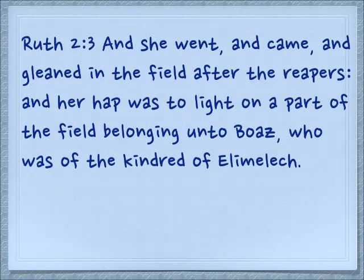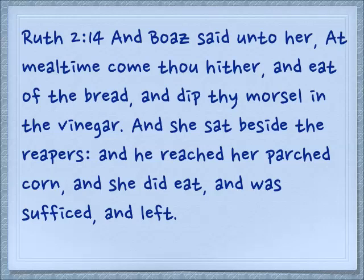Ruth takes advantage of the gleaning laws: 'She went and came and gleaned in the field after the reapers, and her hap was to light on a part of the field belonging unto Boaz, who was of the kindred of Elimelech' — who, as you remember, was Naomi's husband. It just happened that way — or did it? In Ruth 2:14 there is a shadow picture of a covenant being made: 'And Boaz said unto her at mealtime, Come hither and eat of the bread and dip thy morsel in the vinegar. And she sat beside the reapers, and he reached her parched corn and she did eat and was satisfied and left.' You can see more in this video about Ruth and this covenant.